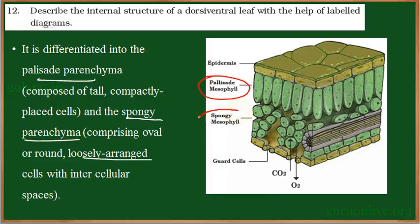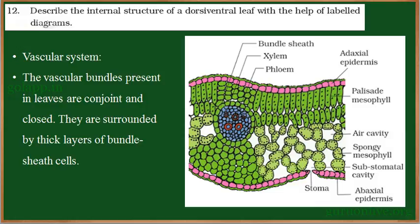The main difference between palisade and spongy parenchyma is in shape and arrangement: palisade is elongated and parallelly arranged, while spongy is more oval and loosely arranged. In the mesophyll region we can find the presence of vascular bundles — that is xylem and phloem. Xylem and phloem bring water and minerals to the leaf, and the food synthesized in the leaf is transported to other parts. The vascular bundles here are conjoint and closed — closed meaning no presence of cambium, and conjoint meaning they share a common radius.